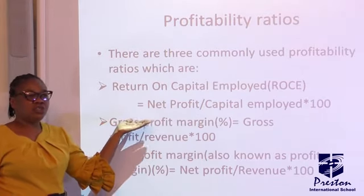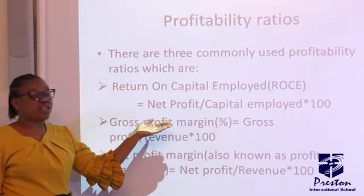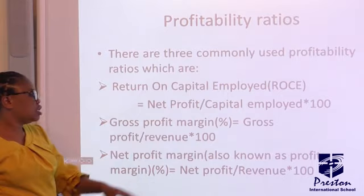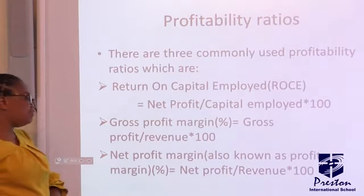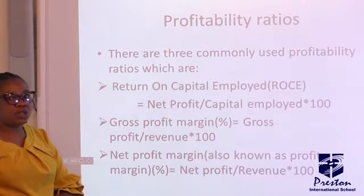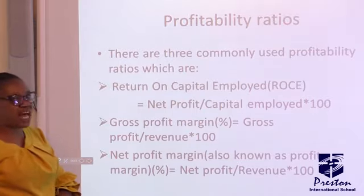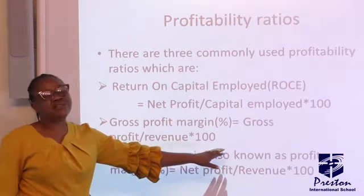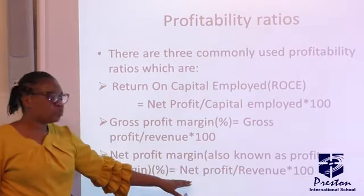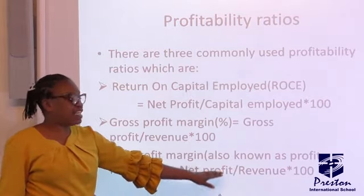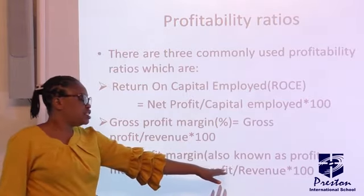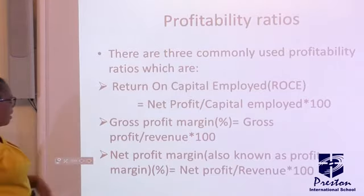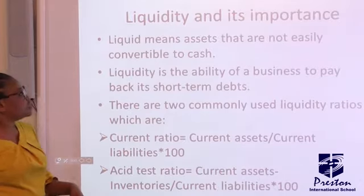The next ratio is gross profit margin, which is expressed as a percentage. You arrive at gross profit margin by dividing gross profit by revenue, then multiplying by 100. The third is net profit margin, also known as profit margin. You arrive at it by dividing net profit by revenue, then multiplying by 100.